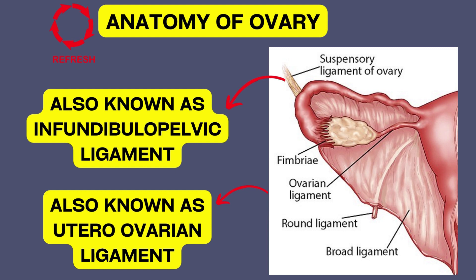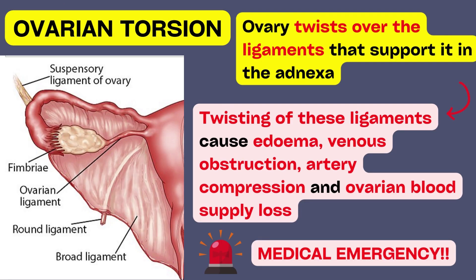The utero-ovarian ligament also connects the ovary to the uterus. An ovarian torsion is a process that occurs when the ovary twists over the ligaments that support it in the adnexa. The fallopian tube often twists with the ovary and is then referred to as adnexal torsion. The ovary receives blood from both the uterine and ovarian arteries.